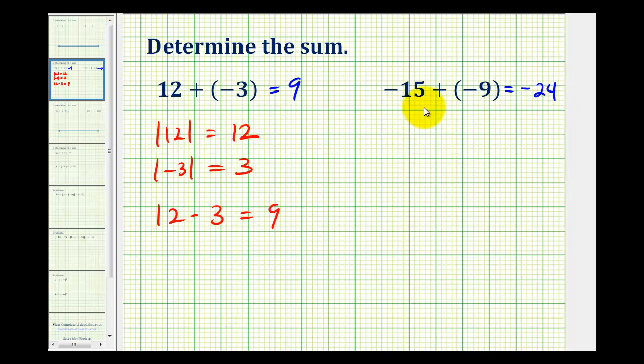Using the formal rules, we would take the absolute value of both, and then because the integers have the same sign, we actually add their absolute values. So this would be 24. But because the original integers were both negative, the sum isn't positive 24, it's actually negative 24.